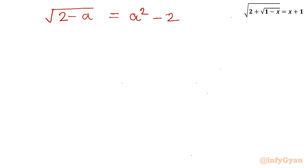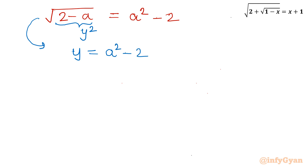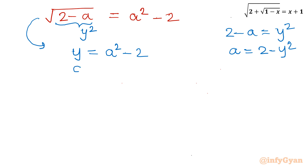Now I will consider 2 minus a as y squared — suppose it equals y squared. So this equation becomes: square root of y squared equals y, which gives y equal to a squared minus 2. Now I will write our substitution: 2 minus a equals y squared, so from here a equals 2 minus y squared.